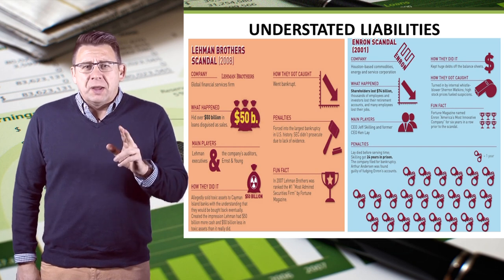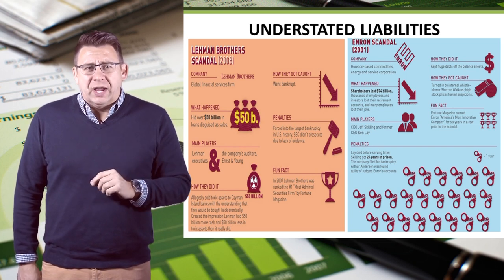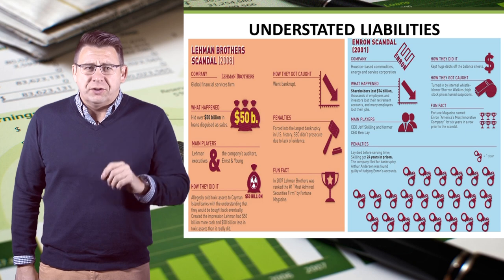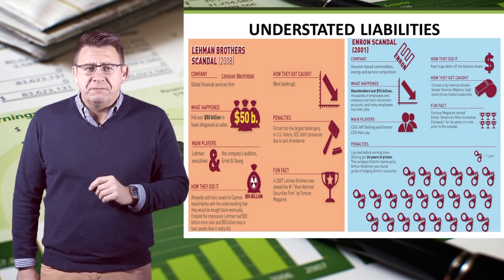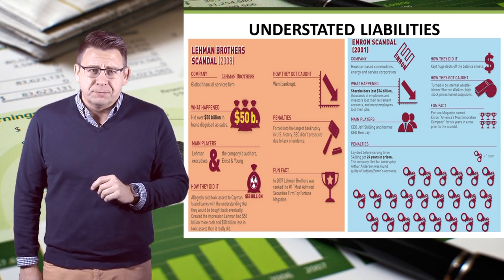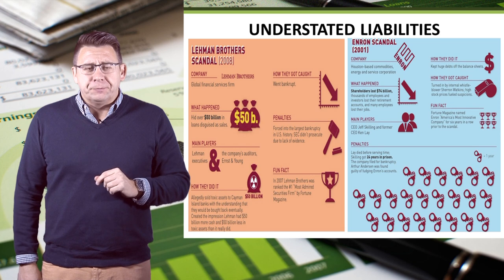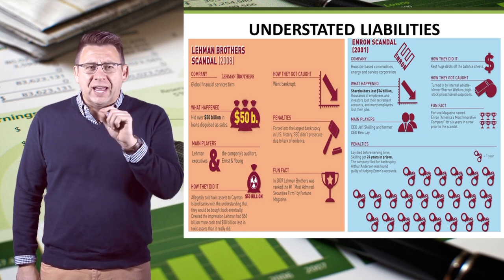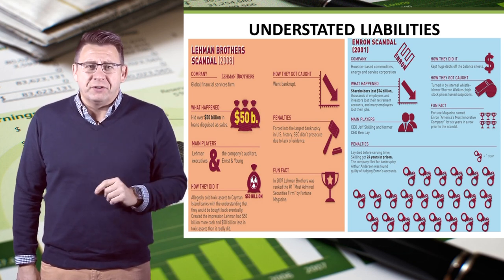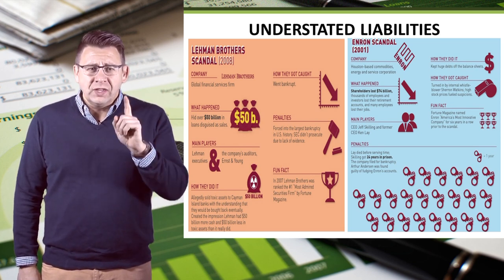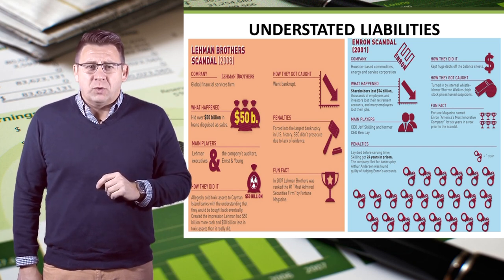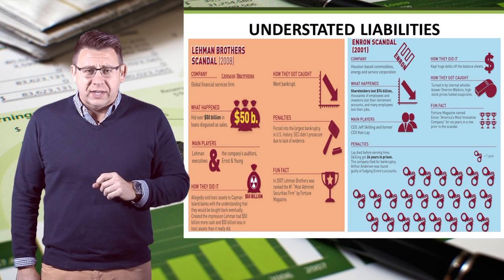Lehman Brothers combined the two ideas and recorded liabilities as revenues to the tune of nearly $50 billion. Think about that journal entry — instead of crediting a liability, they credited a revenue. Some of you may have accidentally done that on one of the assignments. Now think about that error in this context.